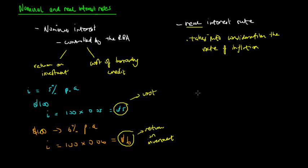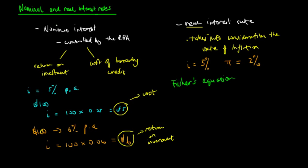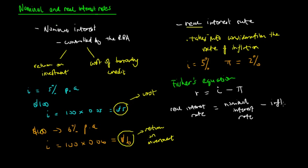This means that sometimes when inflation increases, our return on investment is lower than what we expect, or our cost of borrowing is actually lower than our initial nominal cost. For example, with an interest rate of 5% and inflation pi equals 2%, we can use Irving Fisher's equation — Fisher's equation — which says the real interest rate R equals the nominal interest rate minus the inflation rate, as calculated by the consumer price index.